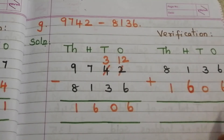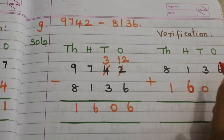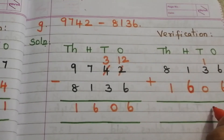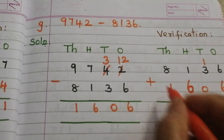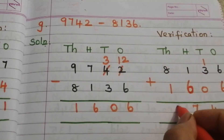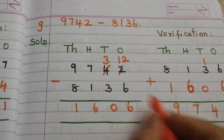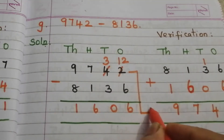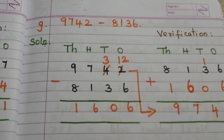Adding 1606 to subtrahend 8136: 6 plus 6 is 12 — write 2, carry 1. 3 plus 1 is 4, and 0 plus 1 is 1 — wait, 6 plus 1 is 7. 8 plus 1 is 9. Now the sum is equal to the minuend 9742, so our subtraction is correct.